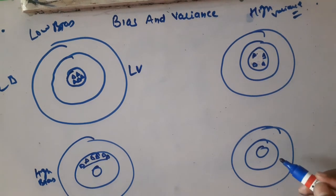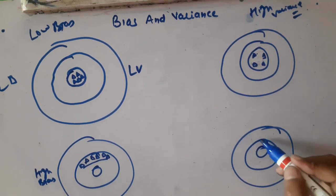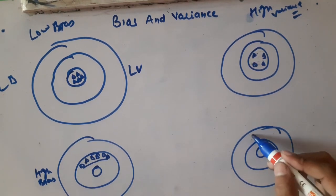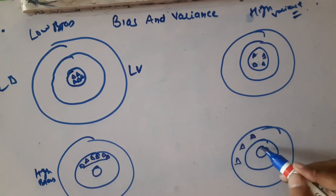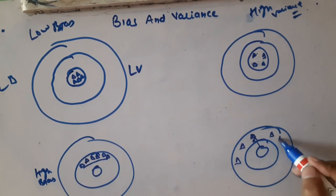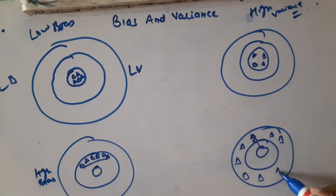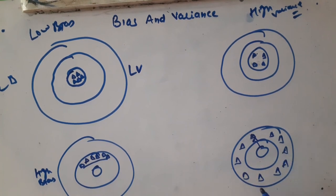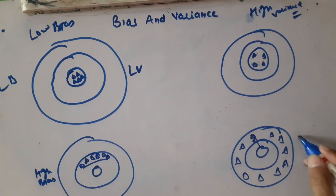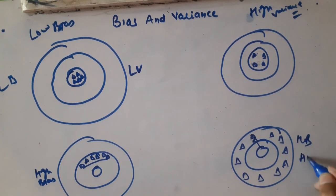The fourth case is when all the data points are both away from the truth and scattered. This is the case of high bias and high variance — the worst scenario, where predictions are neither accurate nor consistent.